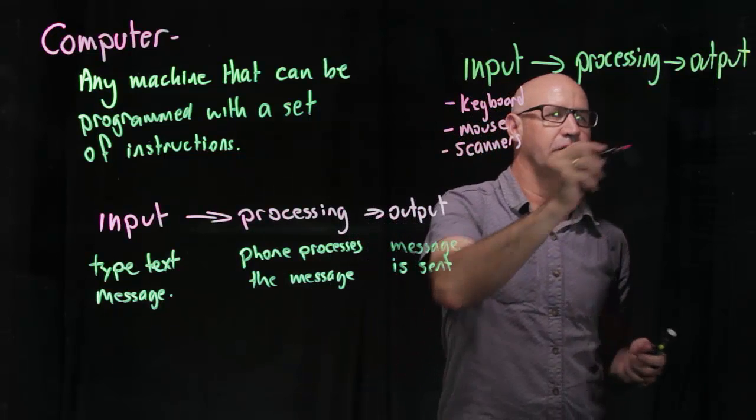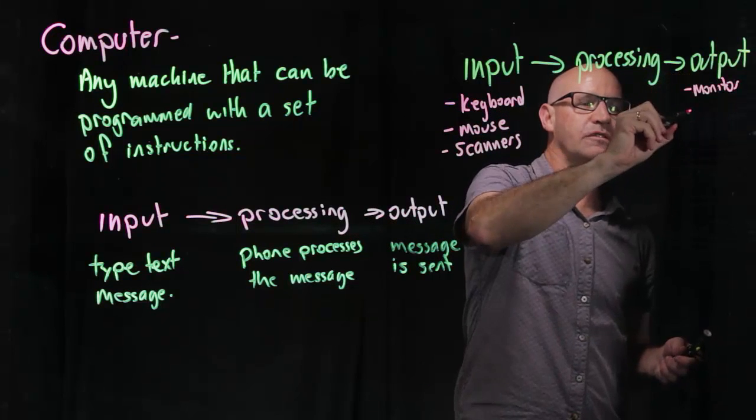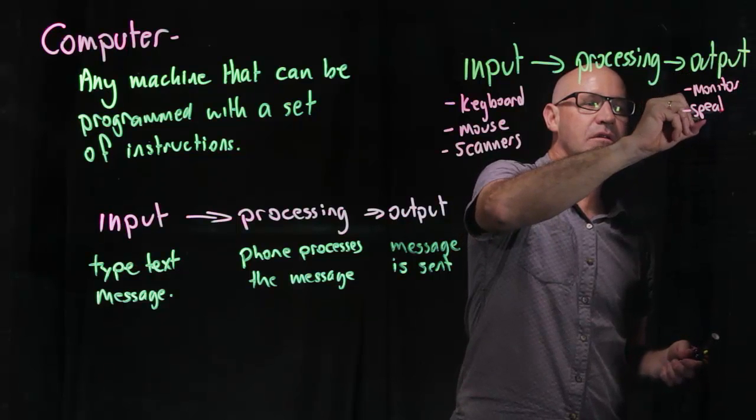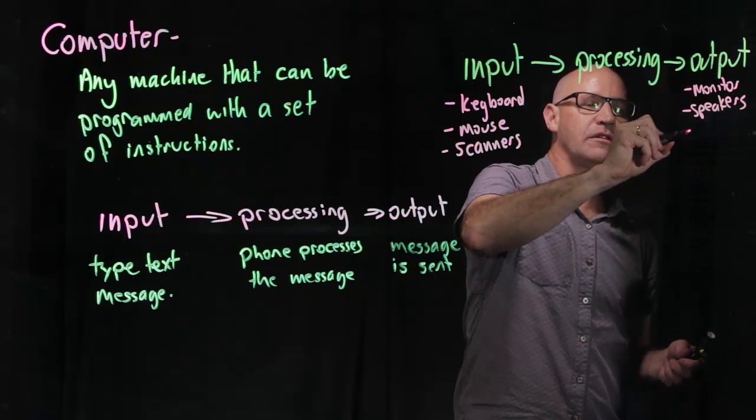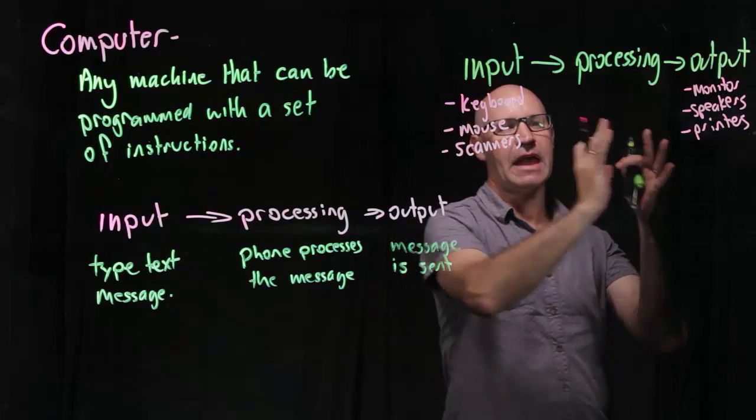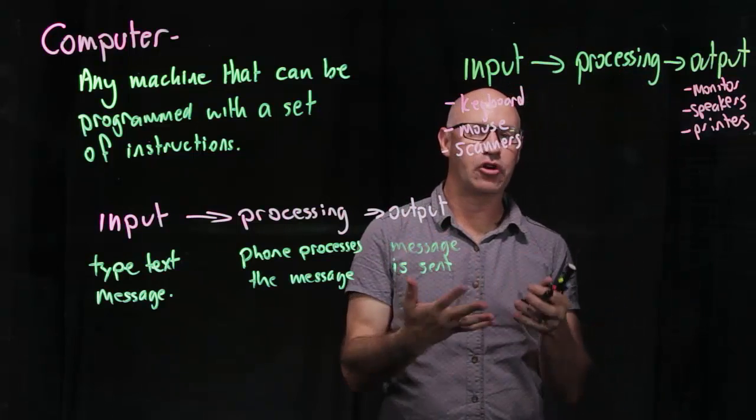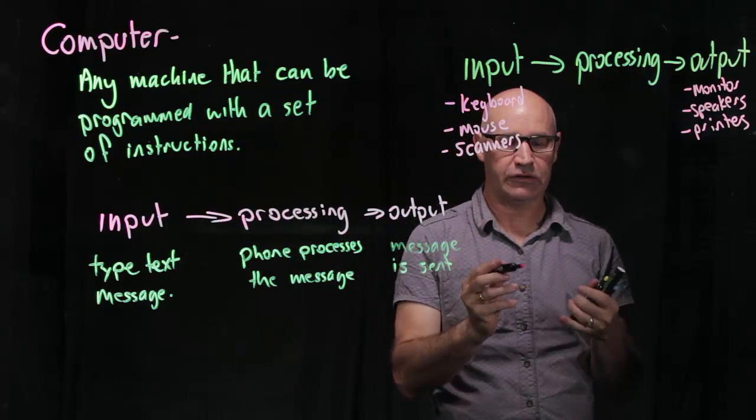And then output devices, we've got our monitor, but also speakers, printers. These are just some examples of our output devices. But right in here in the middle, we have got our processing.